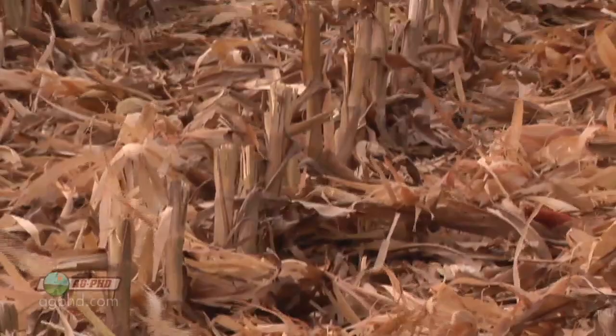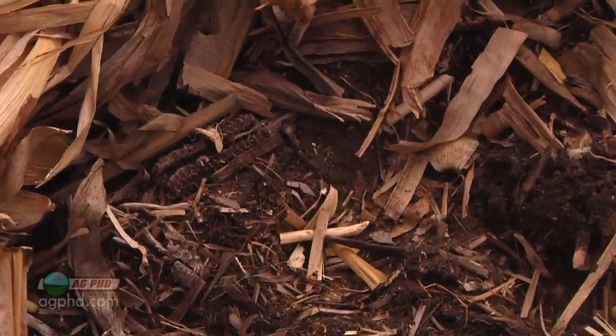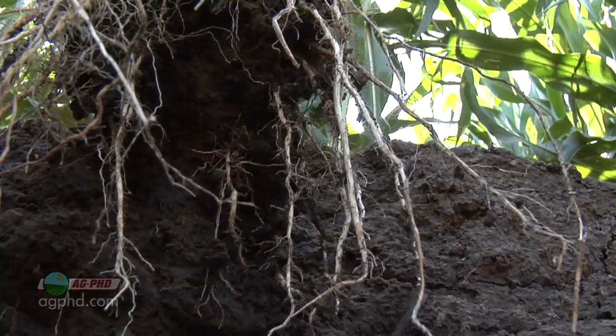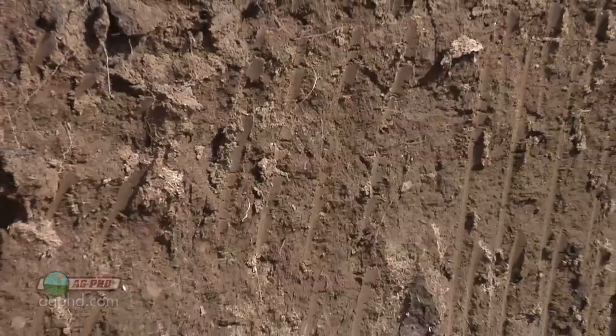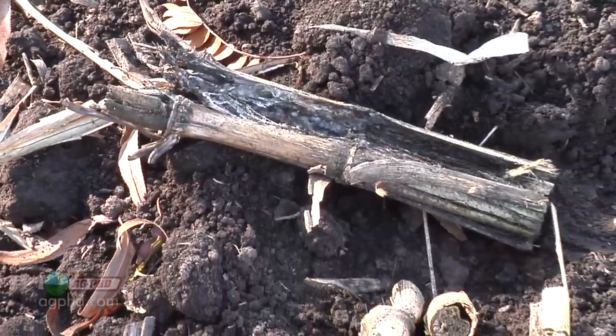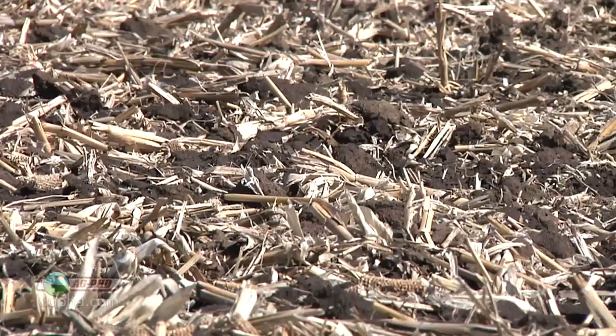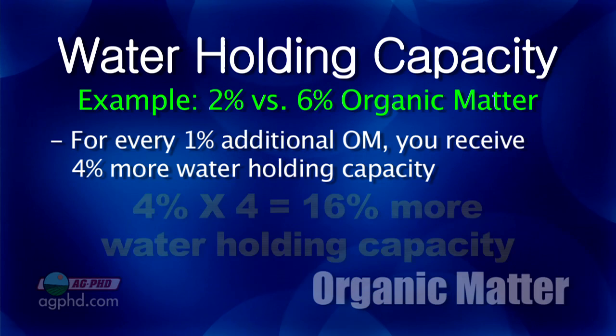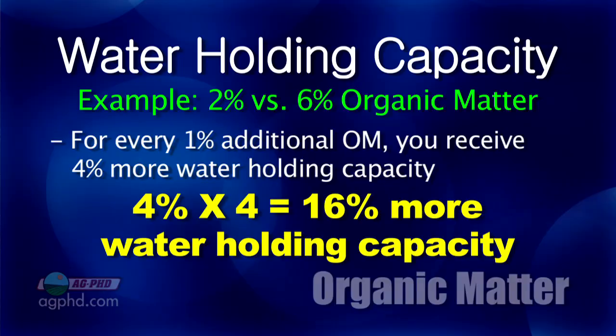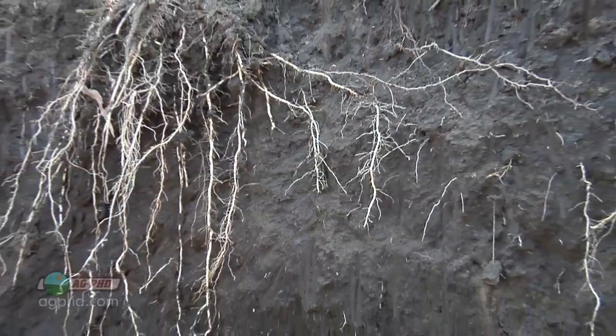Organic matter is important for compaction - think of it like a cushion in your soil that can spring back, as opposed to just soil which gets compacted together. Organic matter releases nutrients - a lot of phosphorus, nitrogen, some sulfur. It can hold nutrients and release them later. It can also hold quite a bit of water: for every one percent additional organic matter you have, you get four percent more water holding capacity. Going from two percent to six percent organic matter - that's four times four - sixteen percent more water you could hold. That's a huge deal, especially in a dry year on non-irrigated ground.